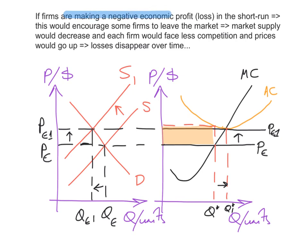Similarly, if firms are making a negative economic profit or loss in the short run, this encourages firms to leave the market. When firms leave, market supply decreases, the supply curve shifts to the left, each firm faces less competition, and prices go up. The losses disappear over time as the rise in price brings the firm back to earning a normal profit or zero economic profit.